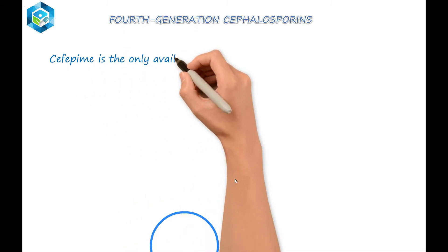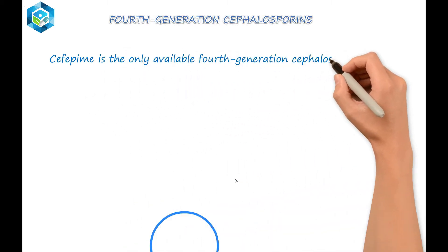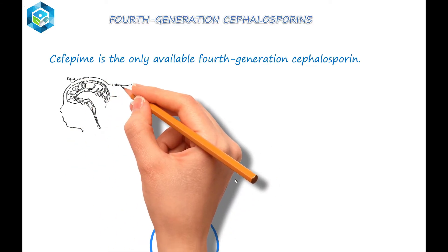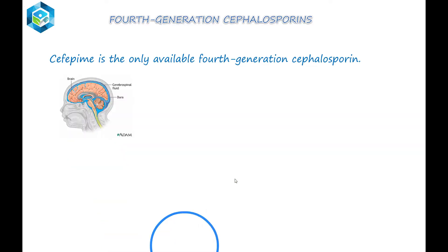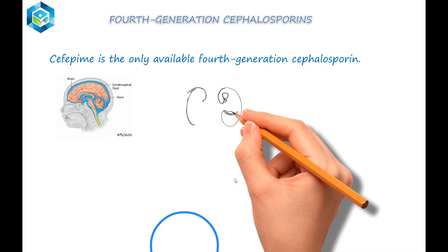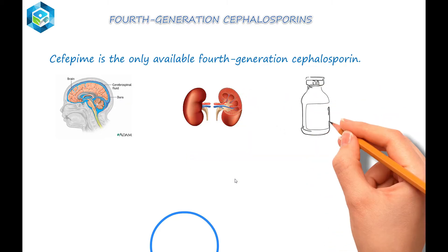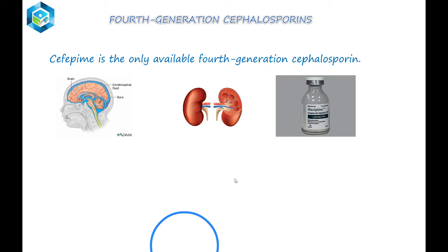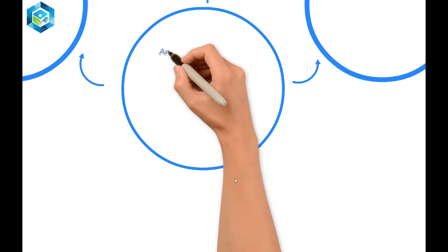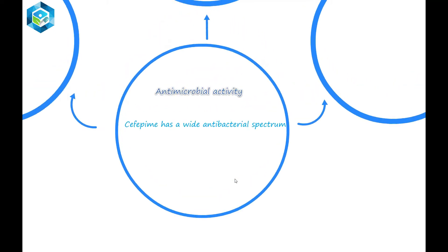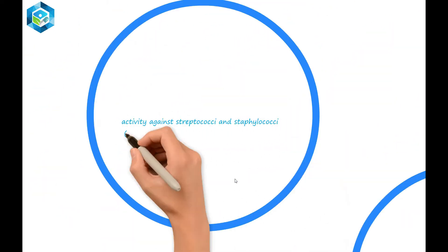Cefepime is the only available fourth-generation cephalosporin. It penetrates well into cerebrospinal fluid, it is cleared by the kidney, and must be administered parenterally — so it is available as a vial. Antimicrobial activity: cefepime has a wide antibacterial spectrum with activity against